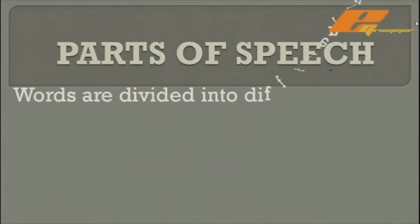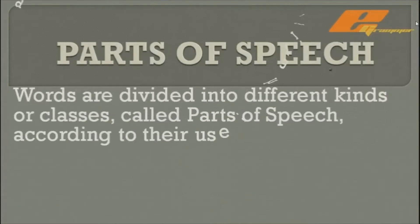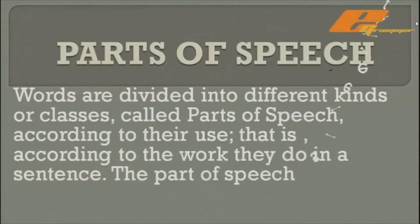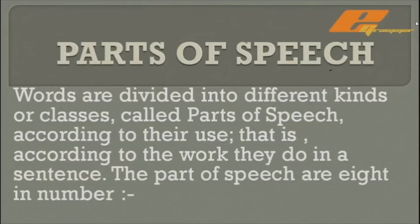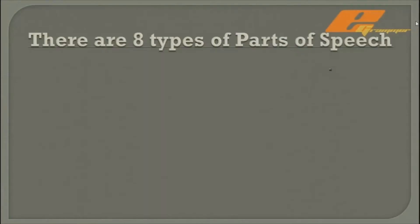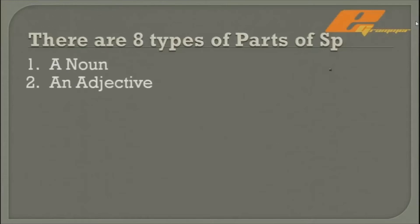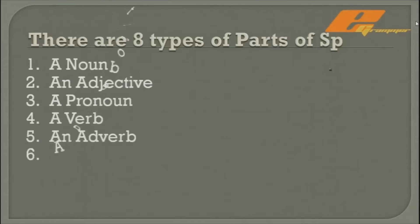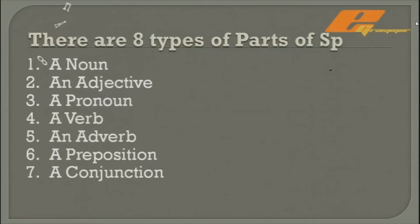We are going to see parts of speech. Words are divided into different kinds or classes called parts of speech, according to the use — that is, according to the work they do in a sentence. There are eight types of parts of speech: a noun, an adjective, a pronoun, a verb, an adverb, a preposition, a conjunction, and an interjection.